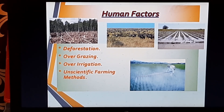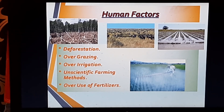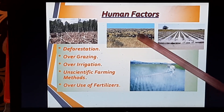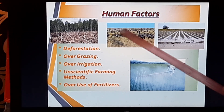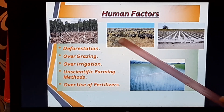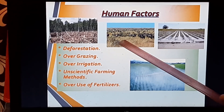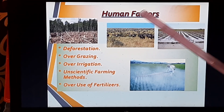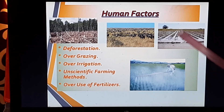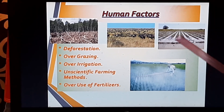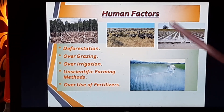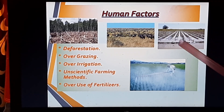The human factors are: deforestation, overgrazing, over-irrigation, unscientific farming methods, and overuse of fertilizer. With overgrazing, if we randomly allow herds to graze continuously, the areas become devoid of grasses, the soil is exposed, and it is then drained out or removed by natural agents. Excessive waterlogging due to over-irrigation makes the soil alkaline and saline, causing it to lose its fertility.